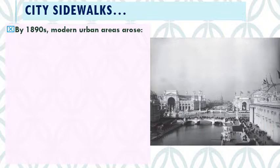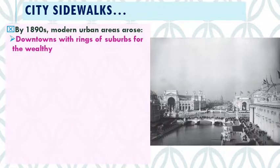But increasingly, the life of the city is dominating people's thought and discussions. You start seeing downtown areas with rings of suburbs developing in major urban areas, both in the north and the south. That pattern continues up until now, with a second major growth of suburbs in the 1950s.